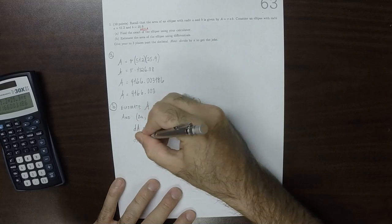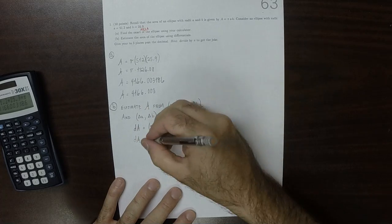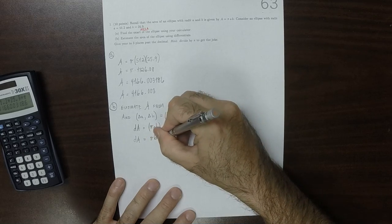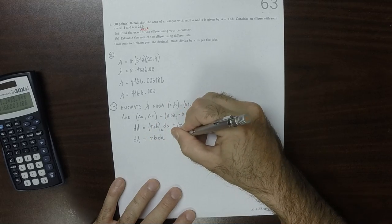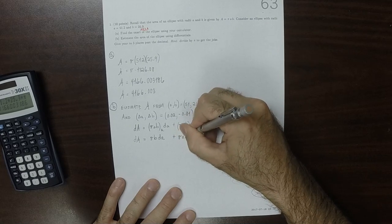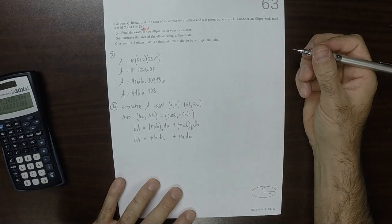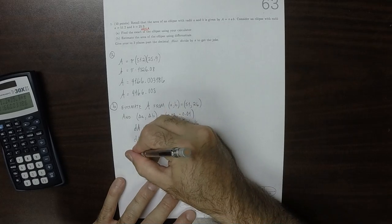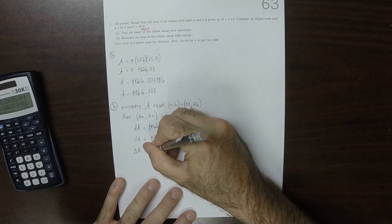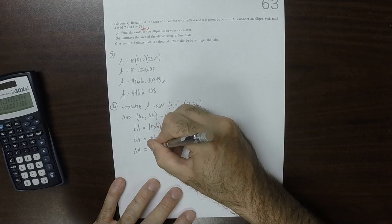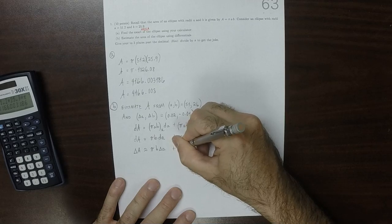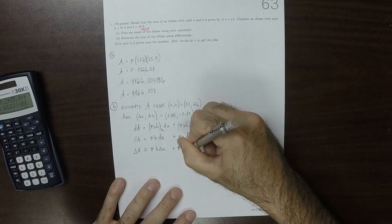So dA equals πb·da plus πa·db. Therefore, ΔA is approximately πb·Δa plus πa·Δb.